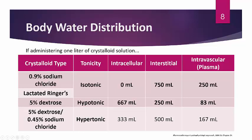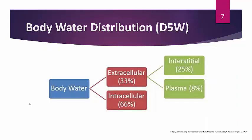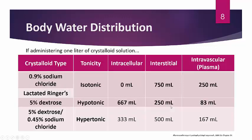5% dextrose (D5W) is completely hypotonic. It distributes exactly as described: two-thirds goes intracellularly, and of the remaining third, 75% goes to the interstitial space and 25% to the intravascular space. When combining two hypotonic fluids — such as 5% dextrose and 0.45% sodium chloride — you get an additive effect resulting in a hypertonic solution.